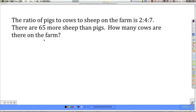Here are some ratio problems that are a little bit more involved. The ratio of pigs to cows to sheep on the farm is 2 to 4 to 7. There are 65 more sheep than pigs. How many cows are there on the farm?